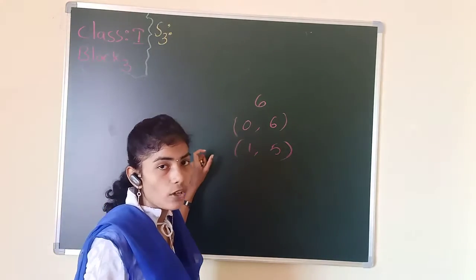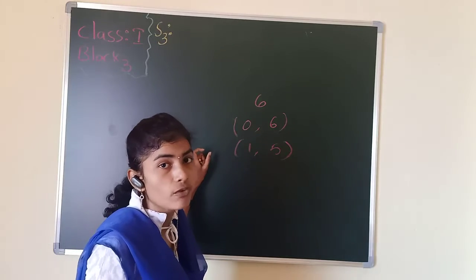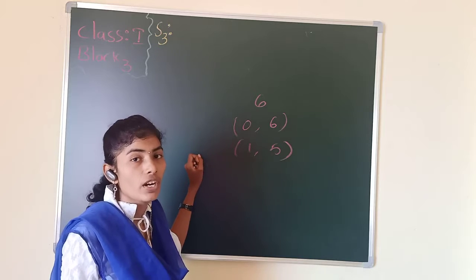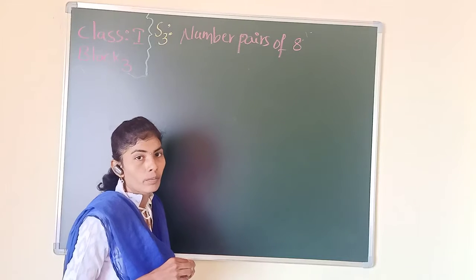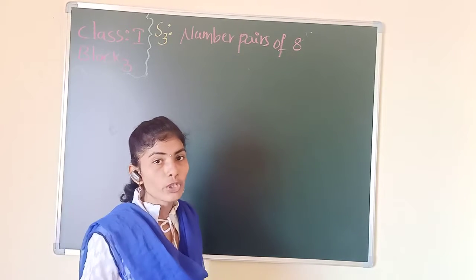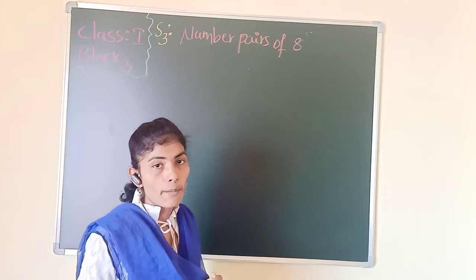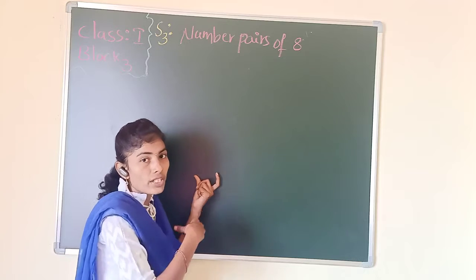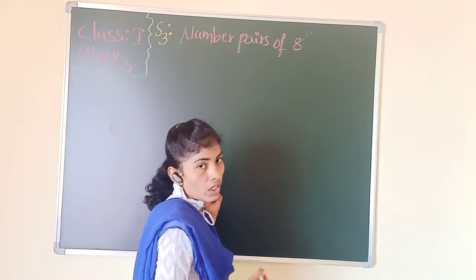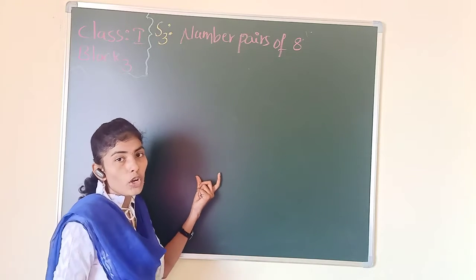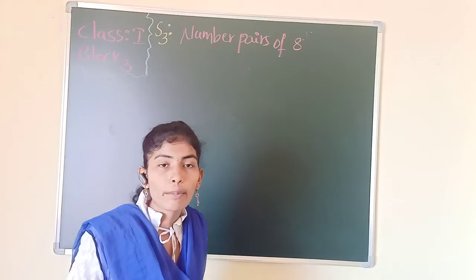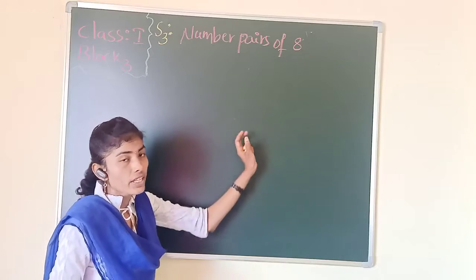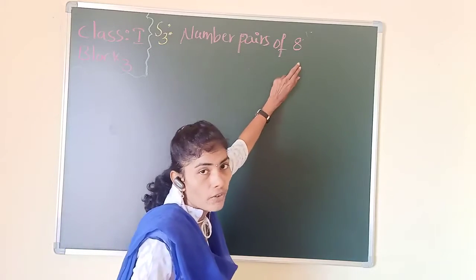In this class we are going to make number pairs for 8. In the previous class we used a ladybird and spots — we drew one ladybird and divided the spots on its two wings. In this class I am going to use trees and monkeys to make different number pairs for 8.